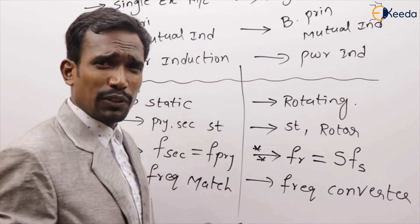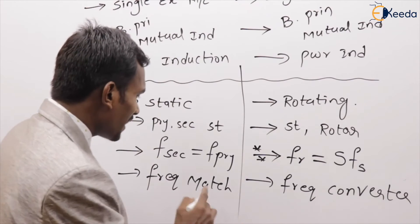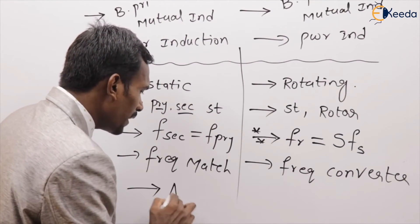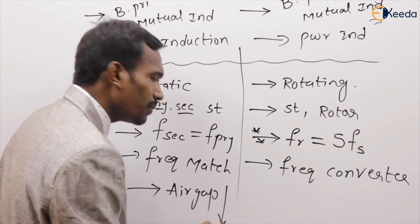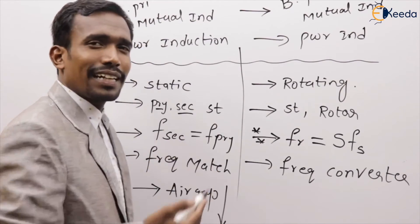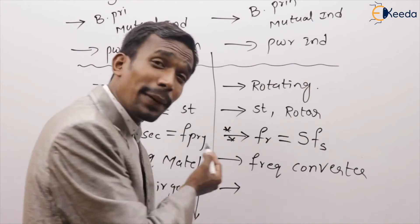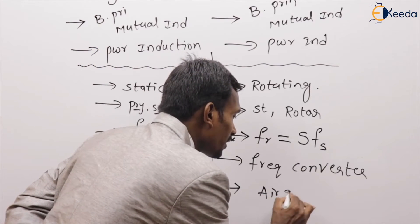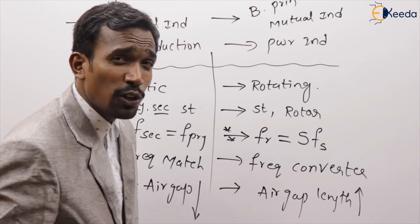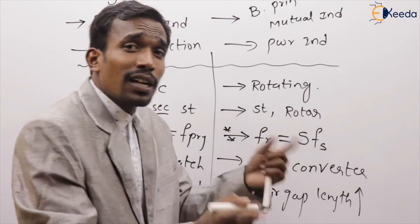Another major difference is the air gap. In the transformer, the air gap between primary and secondary is very minimal. Whereas in the induction machine, the air gap length is greater than that of the transformer.